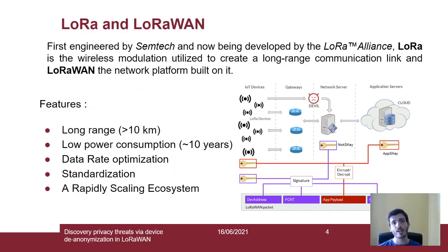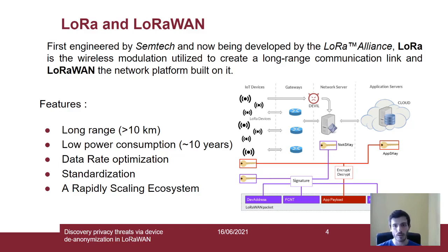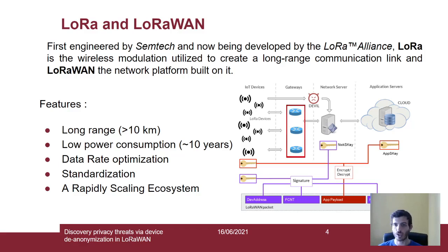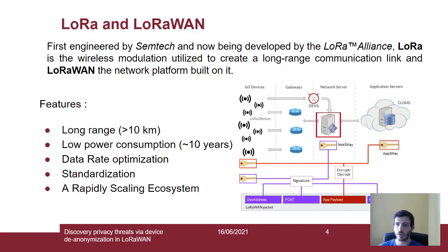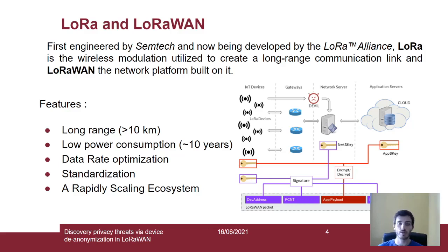So, what is LoRa and LoRaWAN? LoRa is a long-range communication link, first engineered by Semtech and now developed by the LoRa Alliance. LoRaWAN is the communication protocol that devices in a LoRaWAN network must respect in order to exchange communications. The main nodes in a LoRaWAN architecture are the end devices, gateways — which listen for packets from end devices and forward them to the backhaul network — a unique centralized network server, and one or more application servers. Main features include long range (kilometers to tens of kilometers), low power consumption, and automatic data rate optimization.